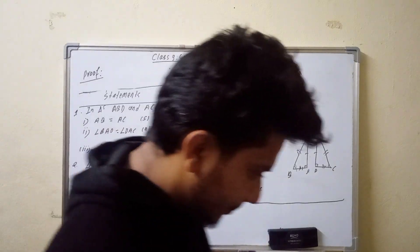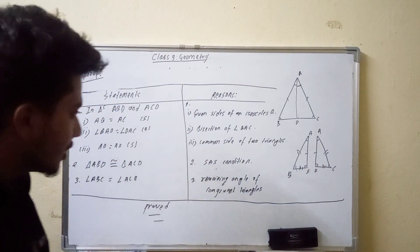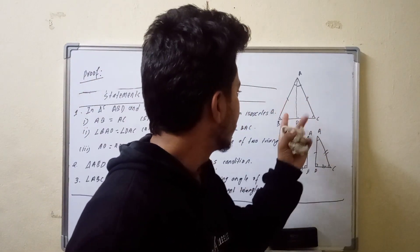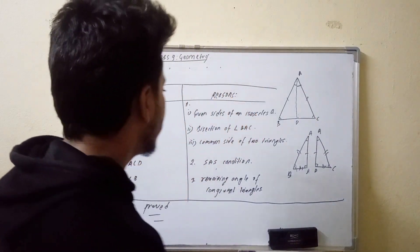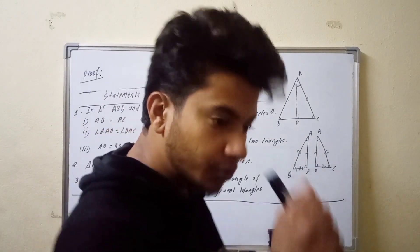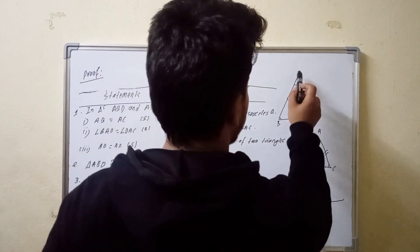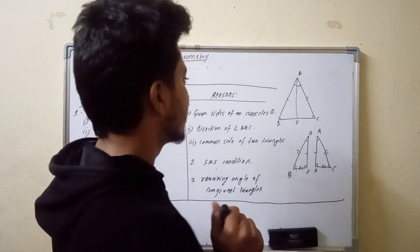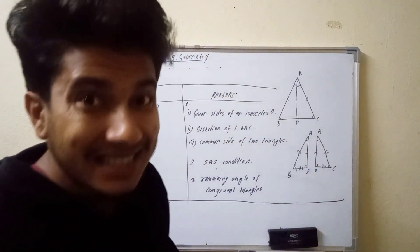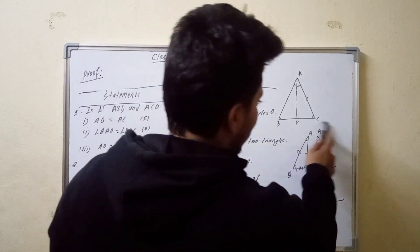We are going to solve the proof that the base angle of the isosceles triangle is equal. We start with the isosceles triangle where the other sides are equal — AB is equal to AC is given. We construct a line AD as a bisector to create two triangles, and we do the two-step proof.